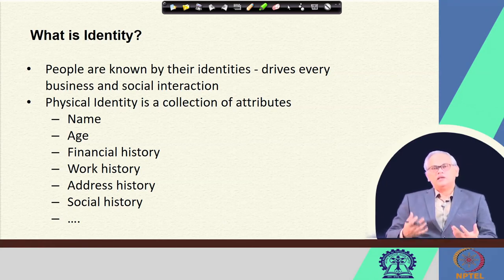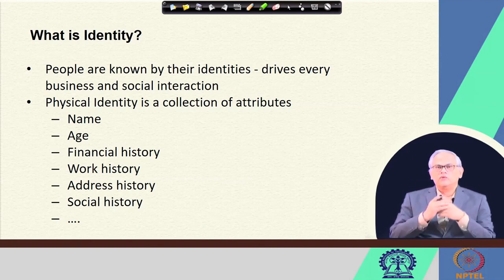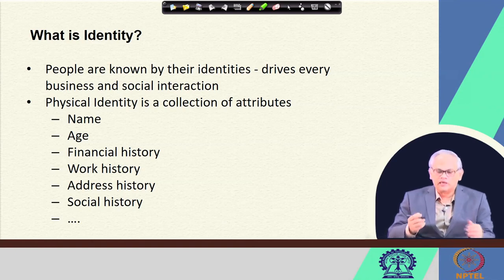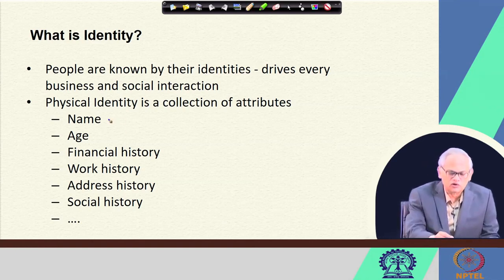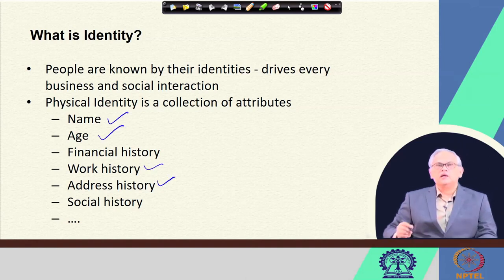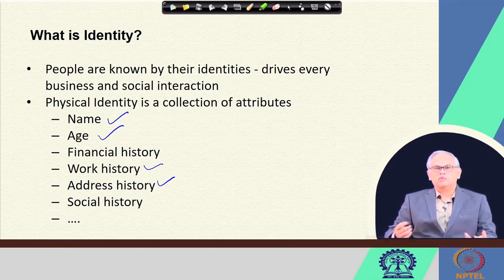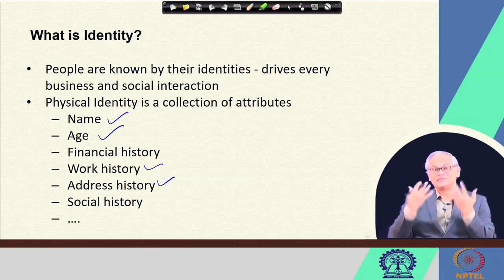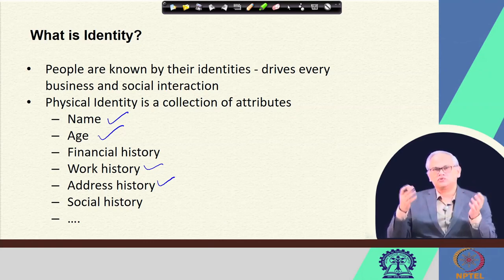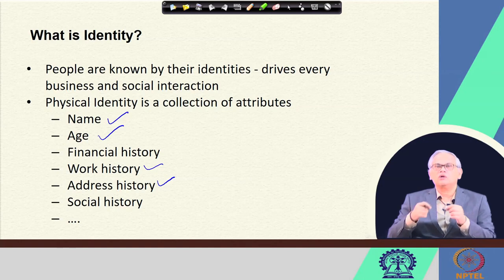So in summary, a physical identity is simply a collection of different types of attributes — name, roll number, date of birth, address, financial history like credit history, and social history. Depending on a particular type of application, these attributes define our physical identities.